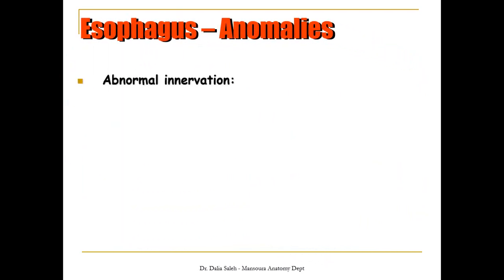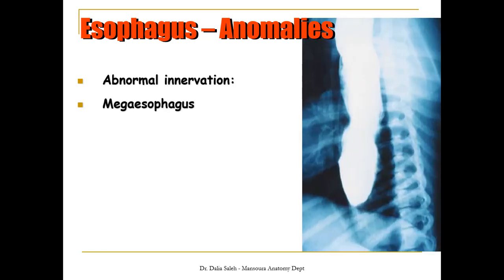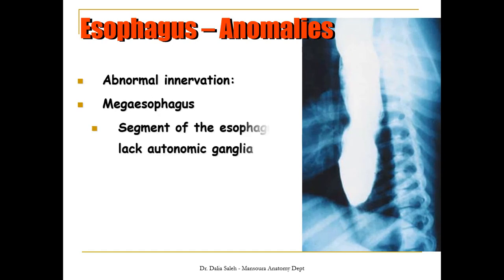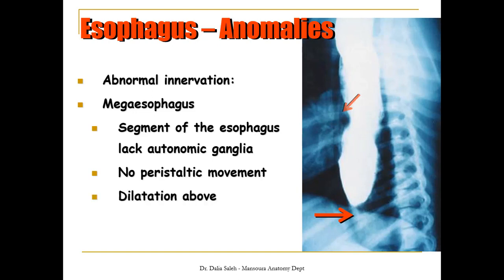Finally, if we have anomalies in the innervation of the esophagus, this is called mega esophagus. This happens because a segment of the esophagus lacks the formation of autonomic ganglia, so there will be no peristaltic movement in that segment. This affects the segment above it, which becomes very dilated — hence the name mega esophagus.